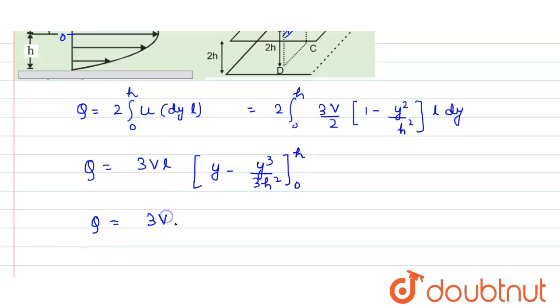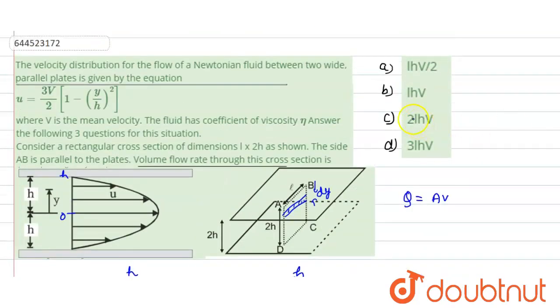So Q value would then turn out to be 3Vl into (h minus—if you put here so it would be h³ divided by h², that means h divided by 3). So it would be 3Vl and this factor would be 2h divided by 3. Now this 3 and this 3 would be gone, so it would be 2hV into l.